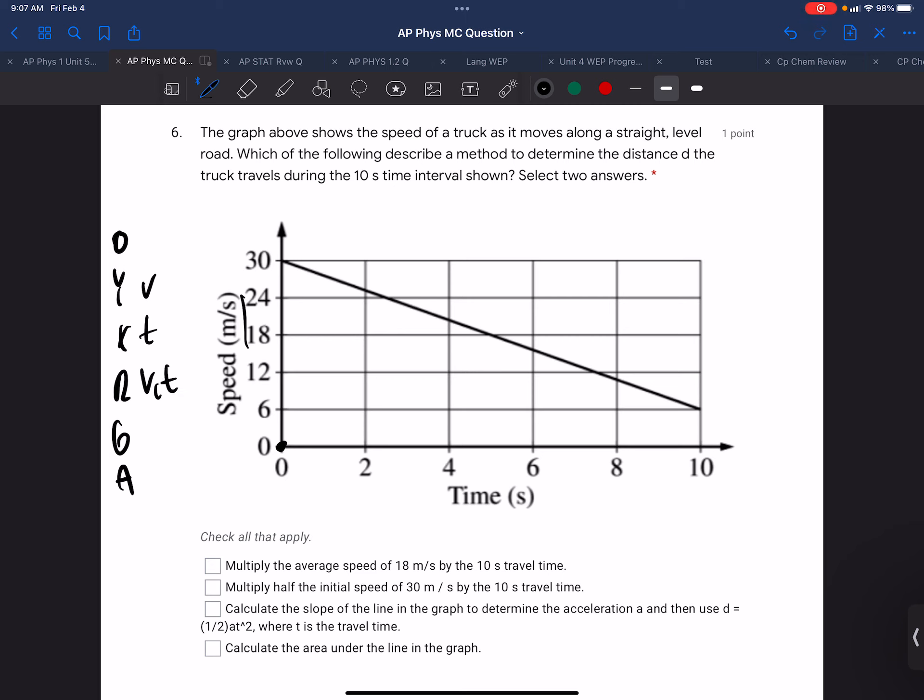For any questions about velocity or time, we'll read from the graph. The slope is delta v over delta t, which by definition is acceleration, and the area is v times t, which would be the distance. I didn't say displacement, because this is speed—the area of a speed-time graph is the distance.